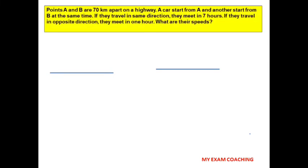The next question: points A and B are 70 kilometres apart on a highway. A car starts from A and another starts from B at the same time. If they travel in the same direction, they meet in 7 hours. If they travel in opposite directions, they meet in 1 hour. What are their speeds?